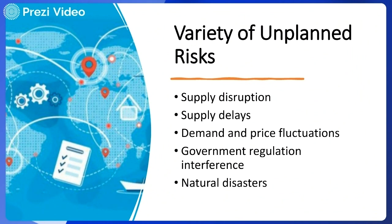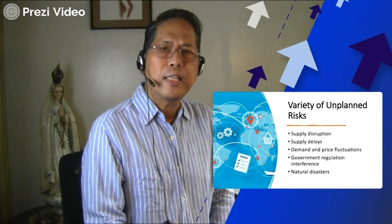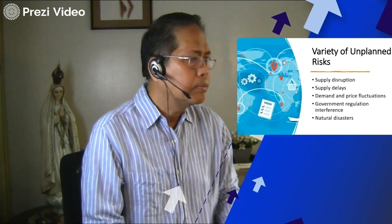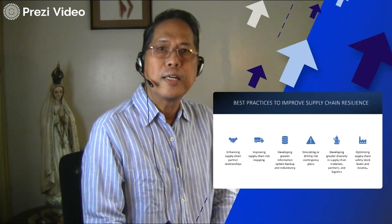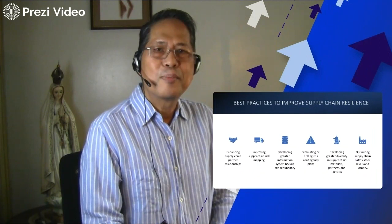As supply chains grow more global, they are exposed to a variety of unplanned risks, including supply disruption, supply delays, demand and price fluctuations, government regulations interference, and natural disasters. If appropriate risk management plans are not in place, these risks can significantly damage supply chain performance. All in all, supply chain resilience is improved by following six best practices.